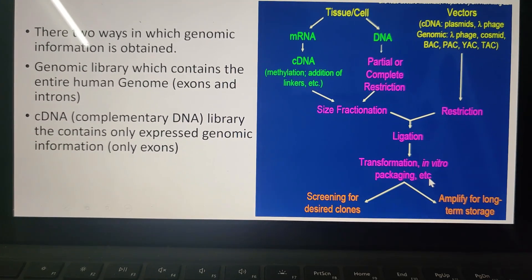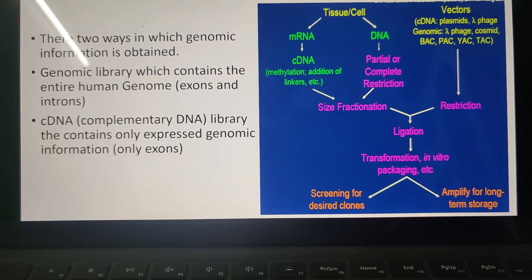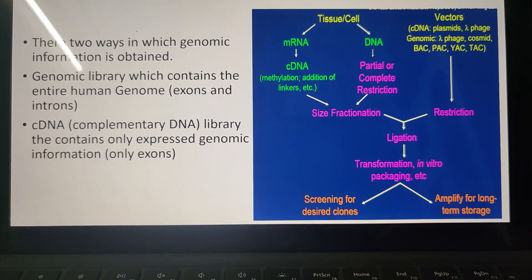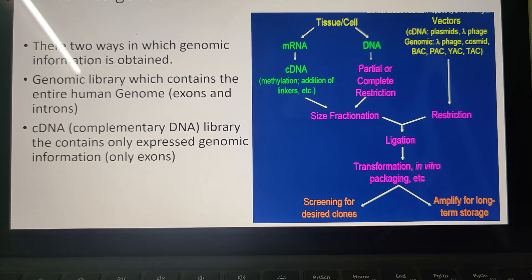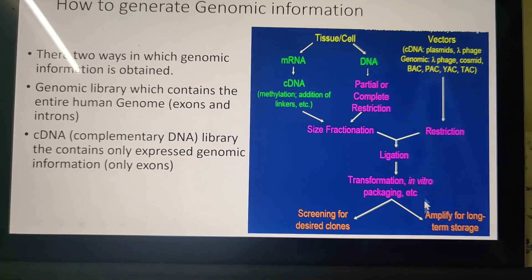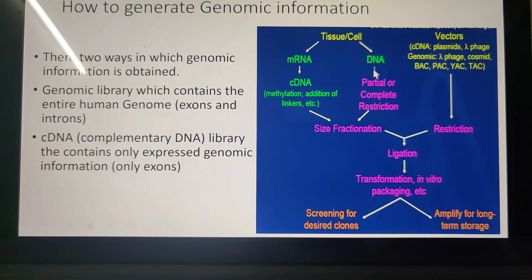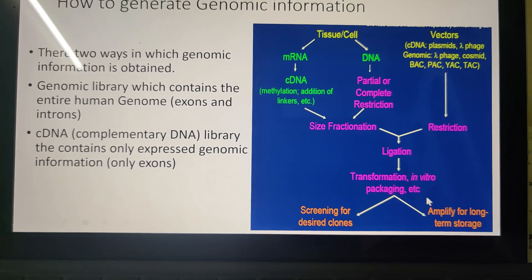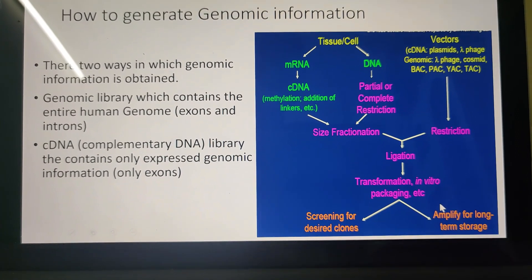You add any one of the ligase enzymes, and then either by transformation or by in vitro packaging method, you transfer it into a particular host — which may be E. coli or yeast, whichever is required. This is the way by which you can create the genomic library.